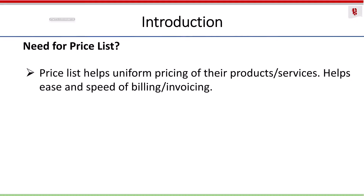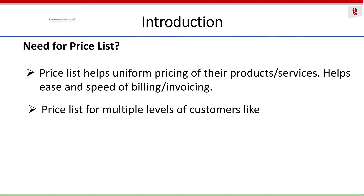Certain businesses have different levels of customers where they want to have differential rates for the same item. In such cases, they will have to create different price lists for each type or level of customers — price lists for multiple levels such as wholesaler, retailer, loyal customers, and so on. These are the different levels of customers for whom they need differential pricing for the same item.